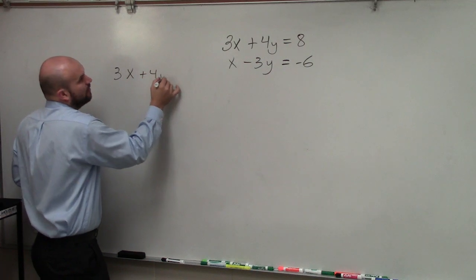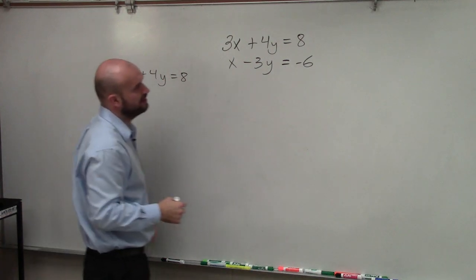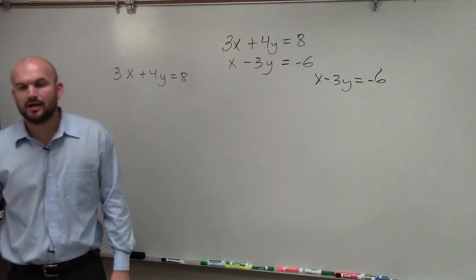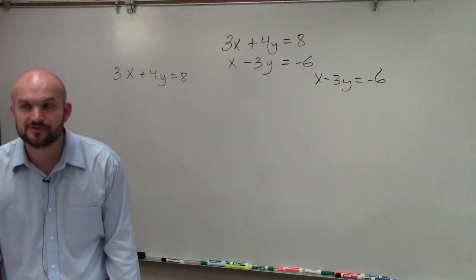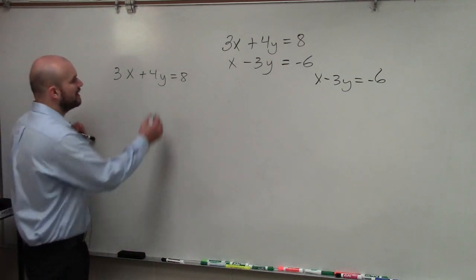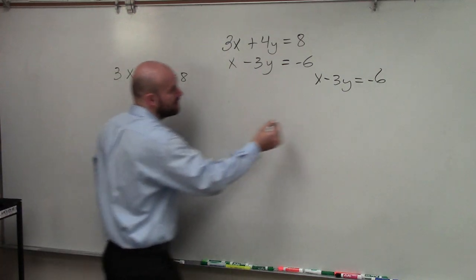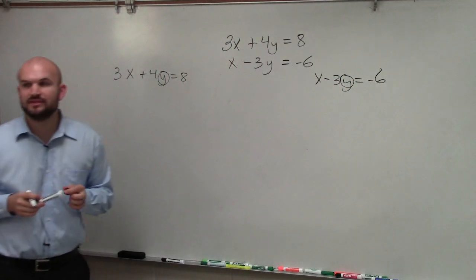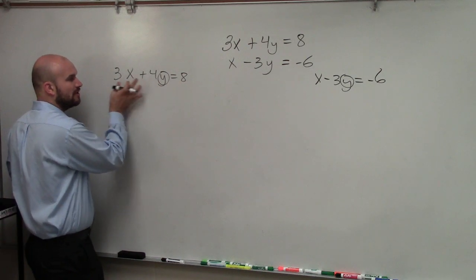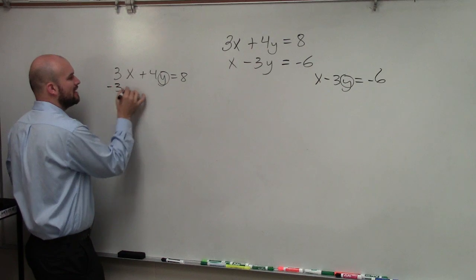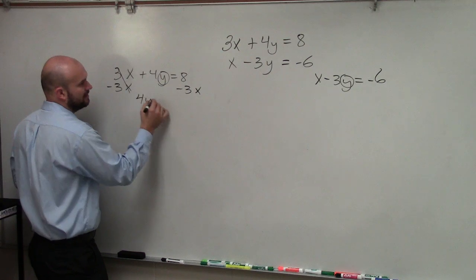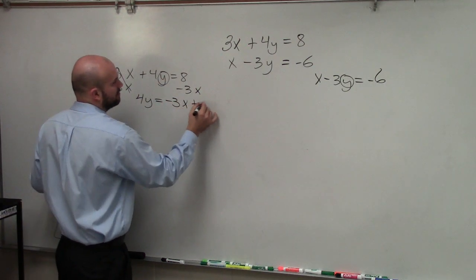So I have 3x plus 4y equals 8, and over here I have x minus 3y equals negative 6. Now, to rewrite these in slope-intercept form — if you remember our homework on literal equations — we're going to want to solve for y, isolating the y variable. I undo everything happening to y. The y variable is being multiplied by 4 and added by 3x, so I'm going to subtract 3x on both sides. Now I have 4y equals negative 3x plus 8.